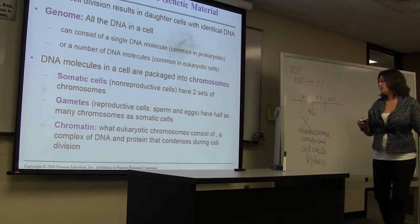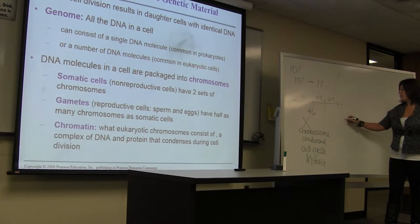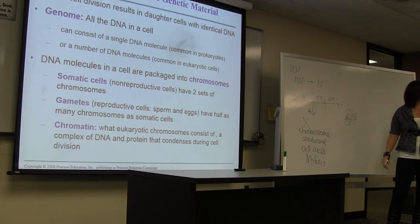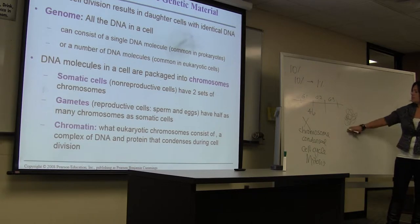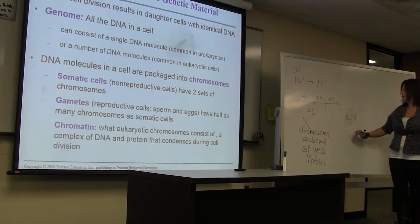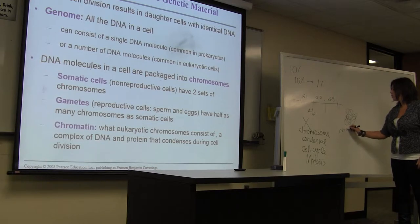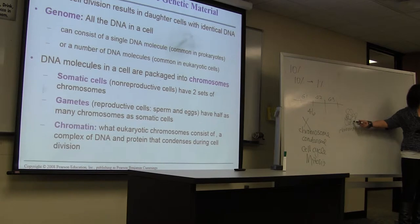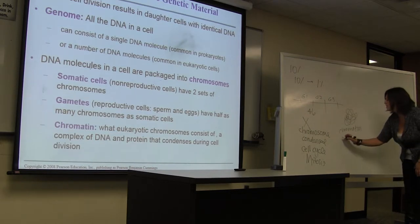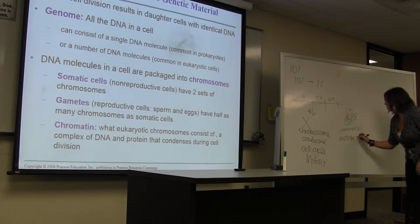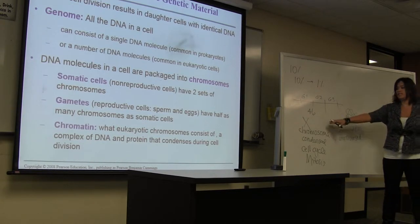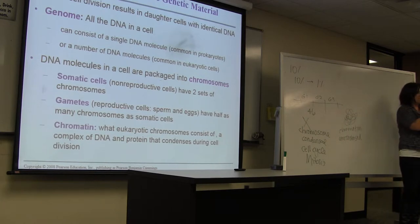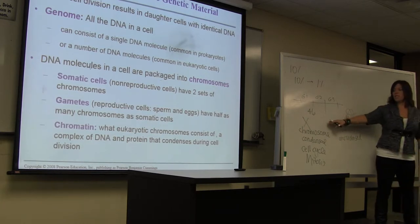The other state of DNA is going to be very uncondensed — just kind of loosey-goosey, like spaghetti. This uncondensed form of DNA is called chromatin. So most of the time your DNA is going to be real loose and very uncondensed, whereas when you're undergoing cell division your DNA is going to tighten up, condense really tight, and create these chromosomes.